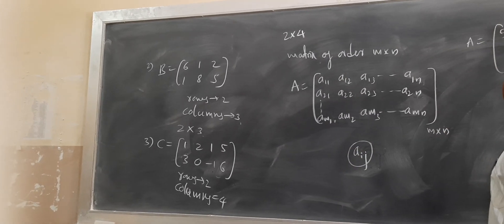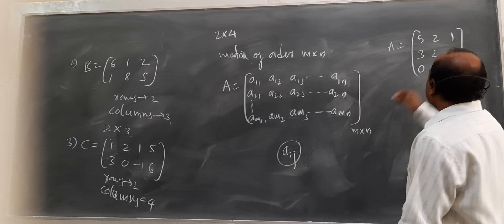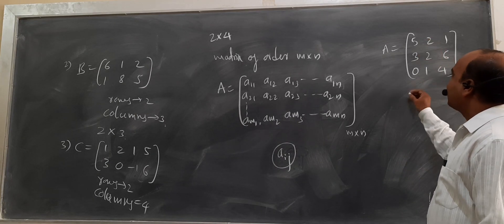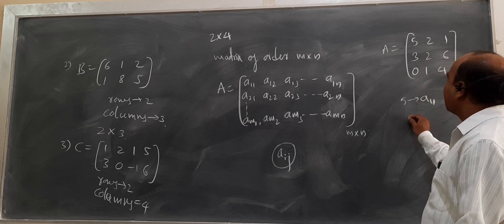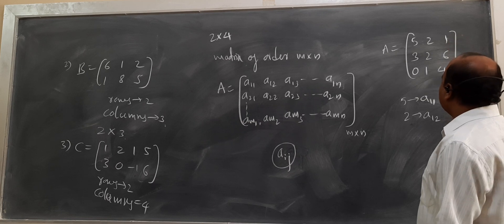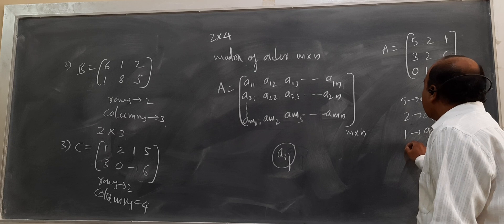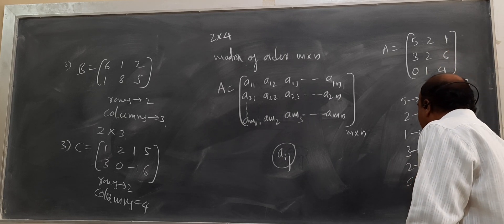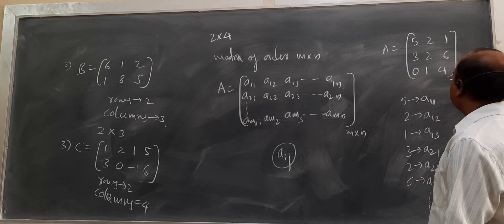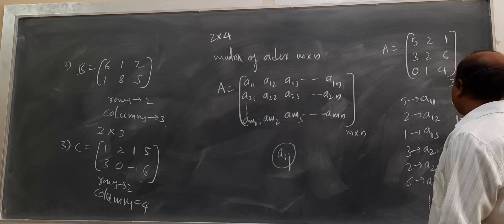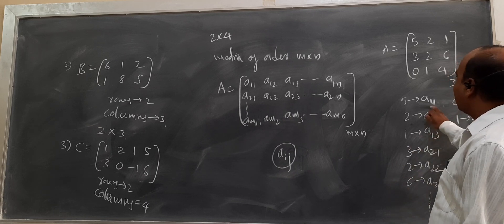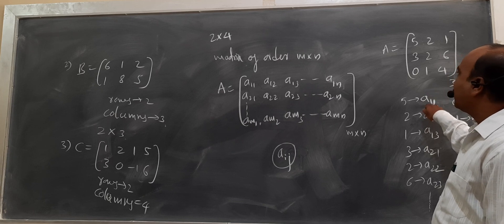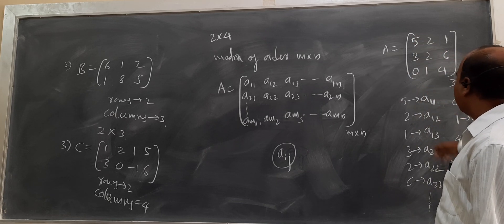Suppose we take an example A equal to [5, 2, 1; 3, 2, 6; 0, 1, 4]. It is a matrix of order 3 by 3 because it has 3 rows and 3 columns. Here 5 is written as A11, 2 is A12, and 1 is A13. Similarly, 3 is A21, 2 is A22, and 6 is A23. Then 0 is A31, 1 is A32, and 4 is the element A33. The subscripts indicate the respective rows and columns of each element in the given matrix.